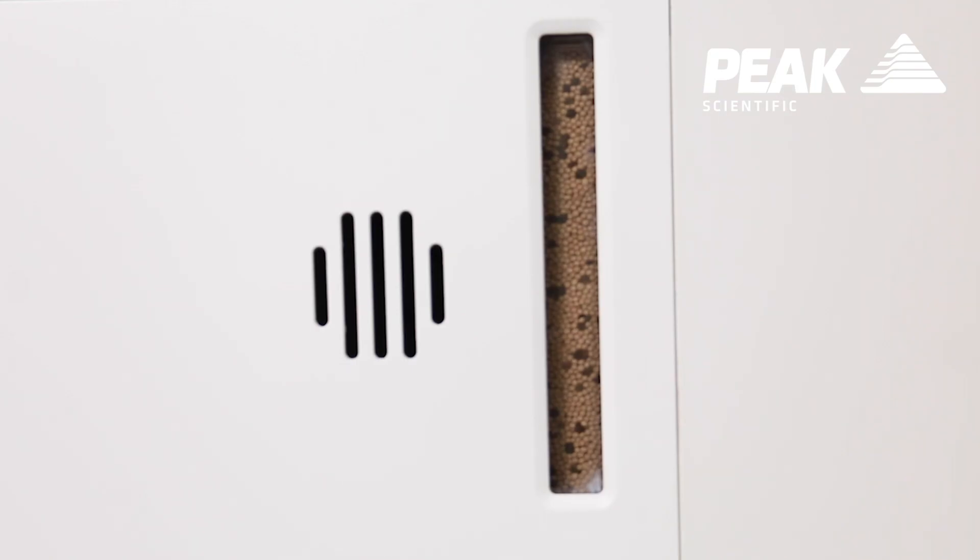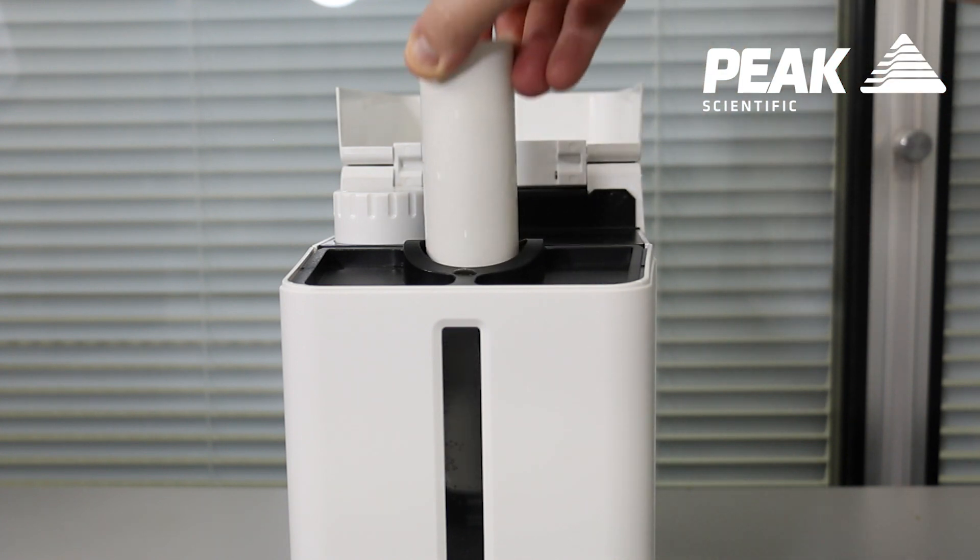The consumables for the unit are a desiccant cartridge and a deionizer cartridge. In terms of delivering deionized water, we realize that different labs have different setups, so we're actually offering three different modes of water delivery to the system.